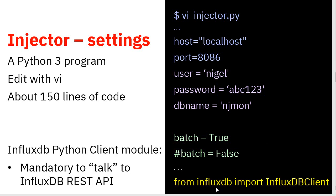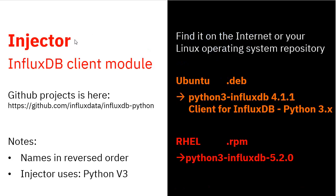Further down in the file, you'll come across the line: 'from influxdb import' — this is the InfluxDB Client Python module. This is mandatory — this is how it connects and converts our JSON data into the InfluxDB line protocol format. To run the injector and get it to talk to InfluxDB, it needs this InfluxDB Client module written in Python. The project is on GitHub, and InfluxData is the company behind the InfluxDB software.